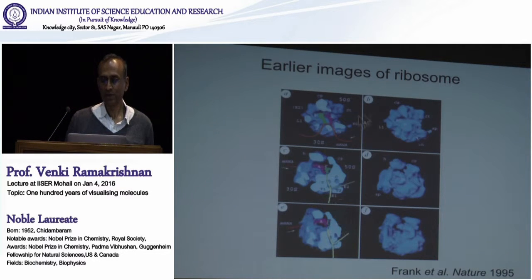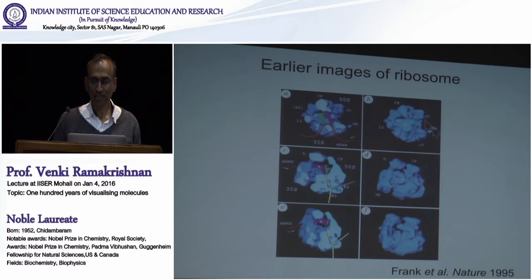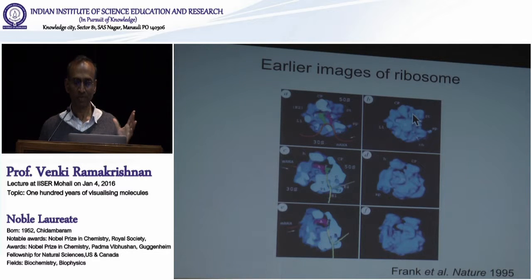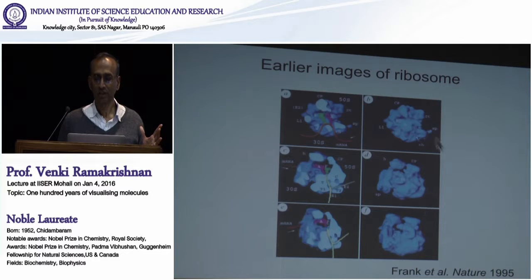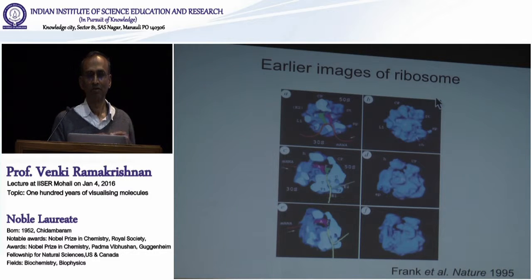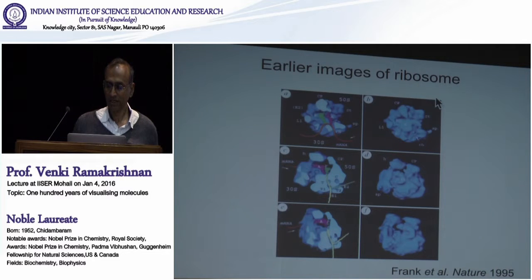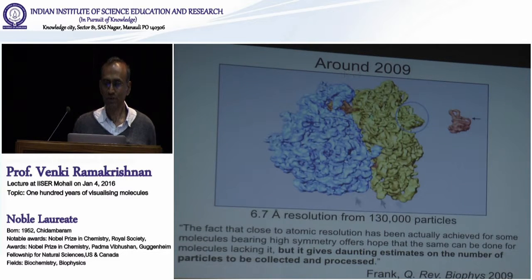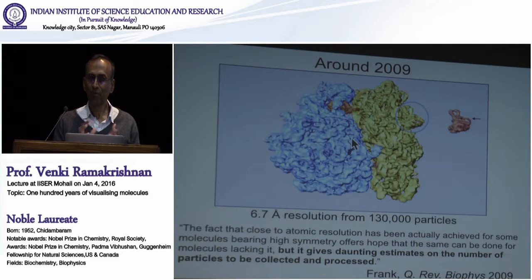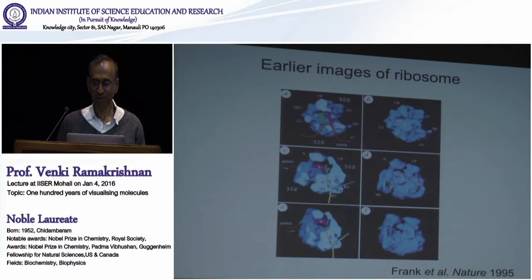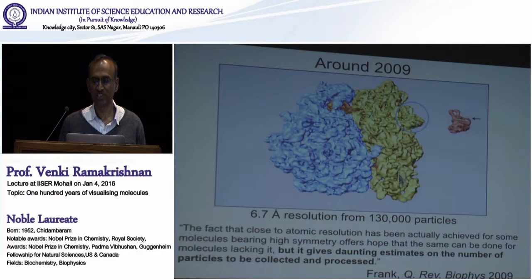Using this, people like Joachim Frank showed that you could get three-dimensional images of the ribosome. Even though crystals of the ribosome had existed for 15 years at this point, in 1995 these were actually the most detailed images we had of the ribosome. Of course, soon after that, crystallography took over and produced very detailed atomic images. But even in 2009, the cryo-EM ribosome image was still not as detailed — you can see it's very coarse and not well resolved, and you can't build an atomic structure from it.